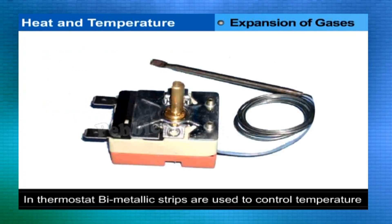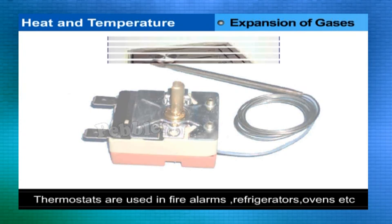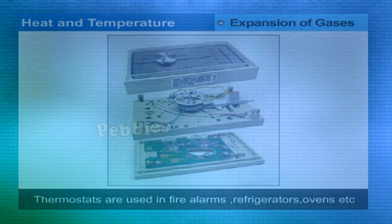In a thermostat: bimetallics are used to control temperature in the form of a device known as a thermostat. Thermostats are used in fire alarms, refrigerators, automatic electric presses, electric ovens, room heaters, etc.